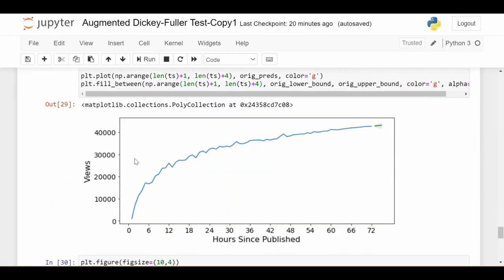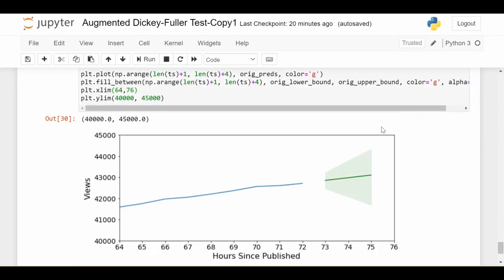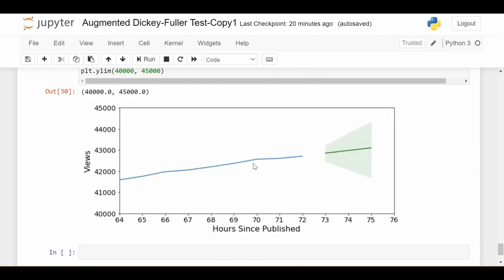Once I do that, we get this graph. This is the original number of views, and the predicted number of views is right here. Let's zoom in. This is the original series up to the 72nd hour, and the prediction of number of views for hours 73, 74, and 75 looks like this with upper and lower limits. It looks reasonable to me.